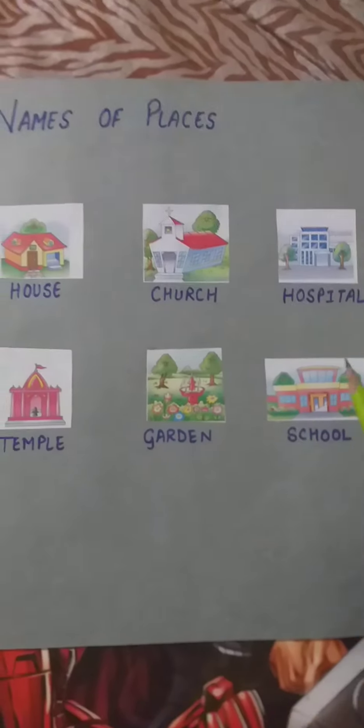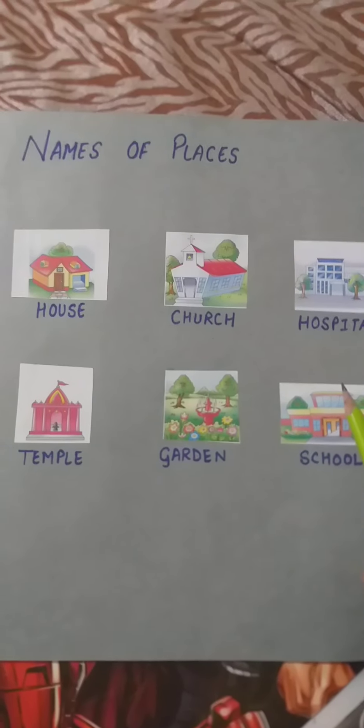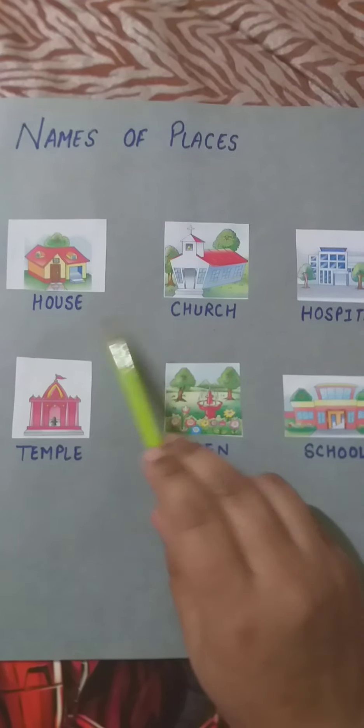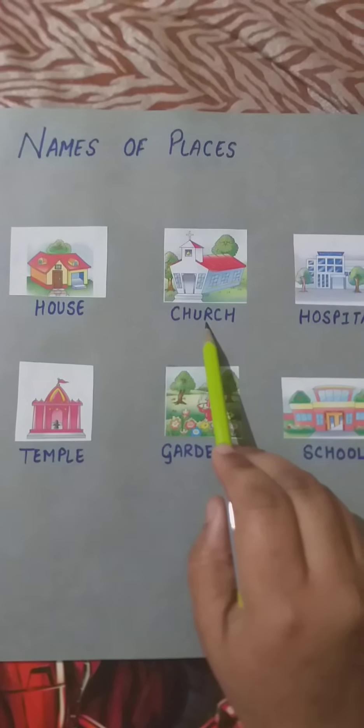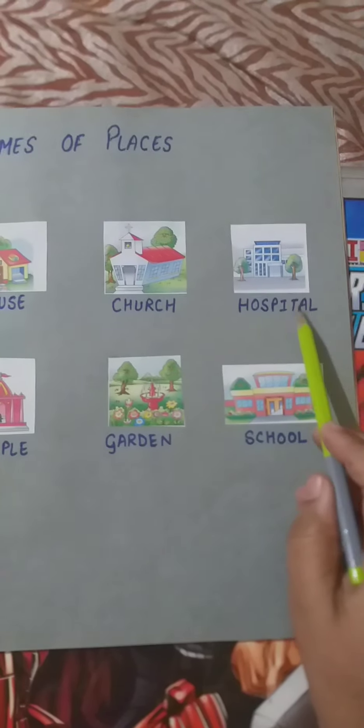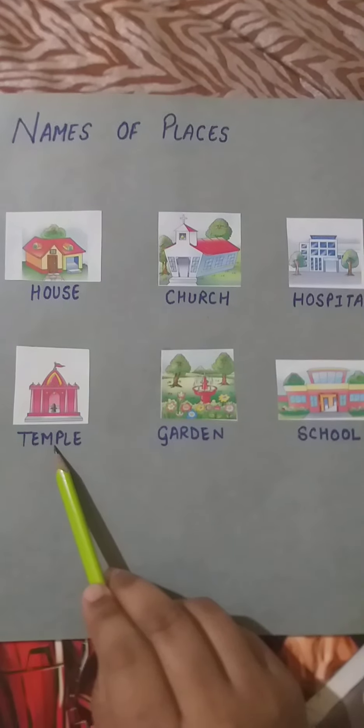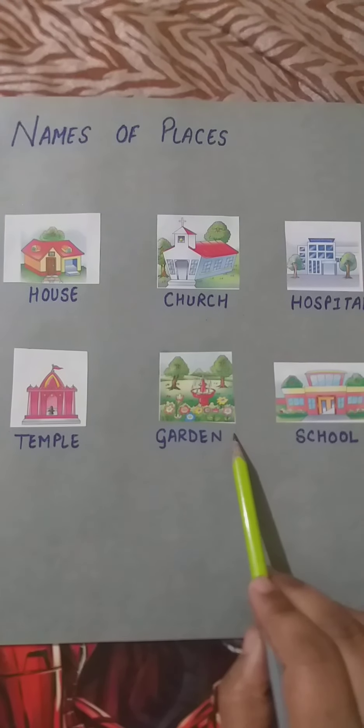The next one is names of places: house, church, hospital, temple, garden.